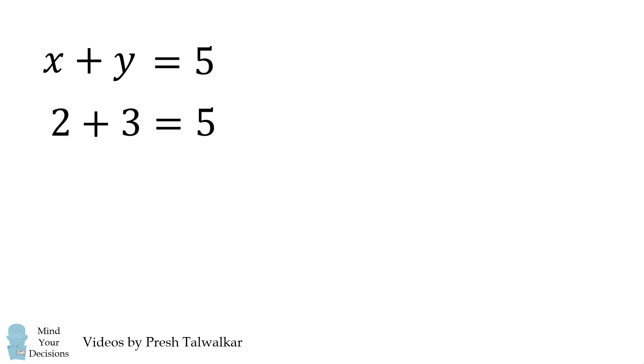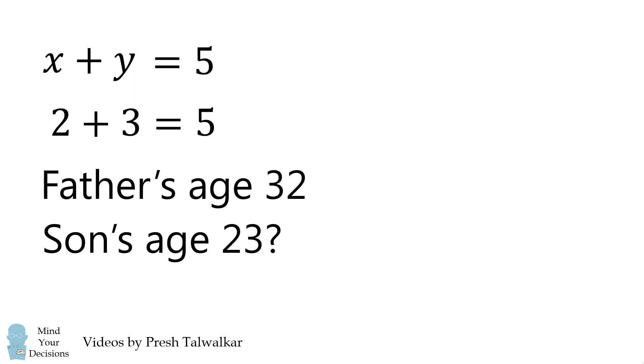Next, let's consider 2 plus 3. The father would have to be 32, and the son would have to be 23. But an age gap of 9 years is unrealistic, so we'll also eliminate this possibility.